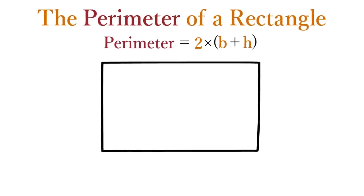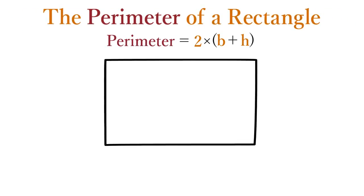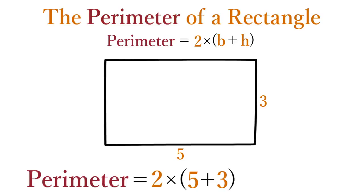For example, suppose you want to find the perimeter of a rectangle with a base of five and a height of three. Starting with the perimeter formula, plug in five for the base and three for the height. Now, adding these two values together gives you eight. So when you multiply this result by two, you find that the perimeter of this rectangle is 16.